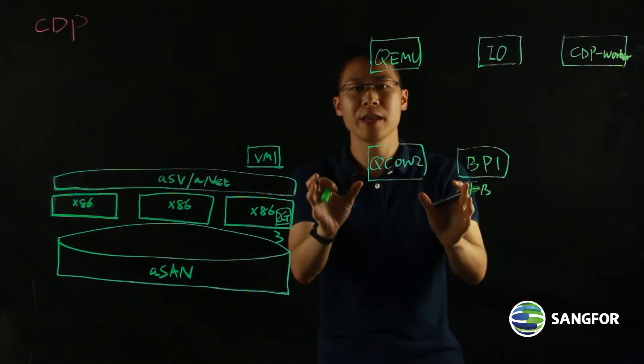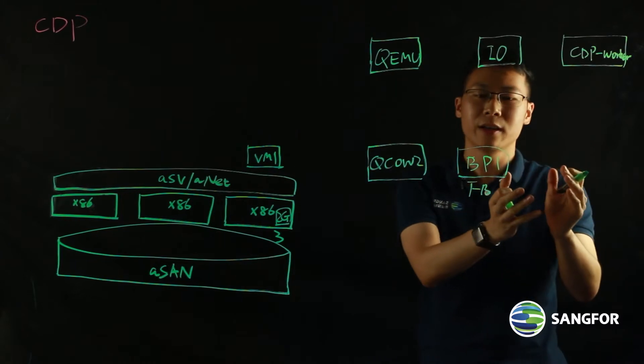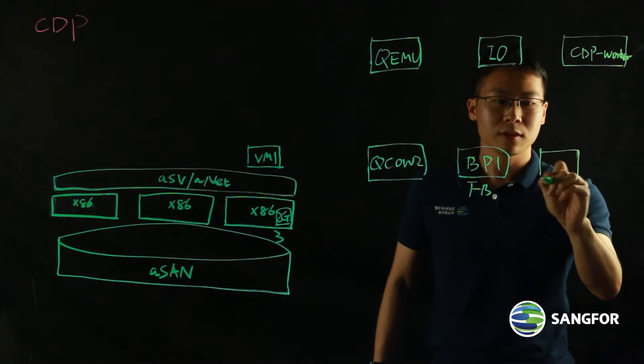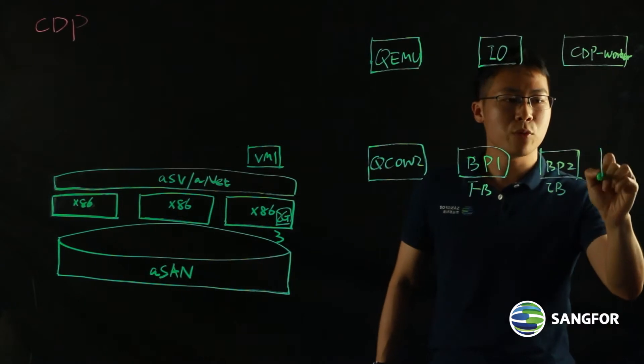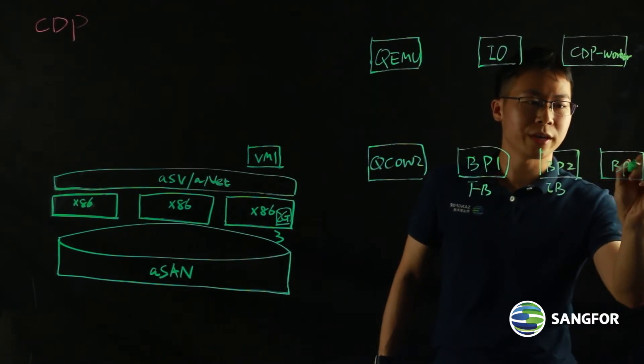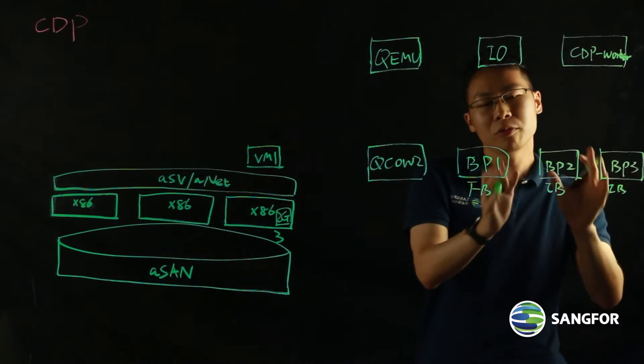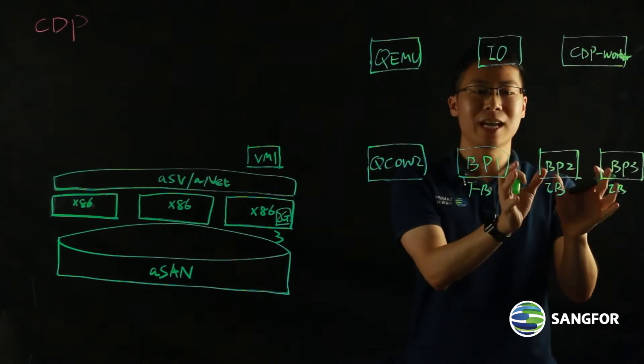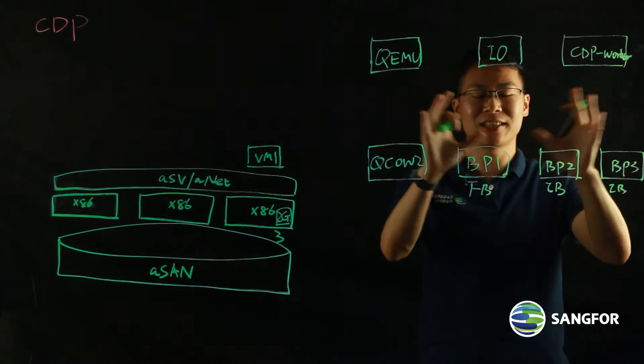It's a full copy of your QCOW2 file. And then subsequently, we can have incremental backup. This is BP2. It's an incremental backup. And then we can have BP3, which is also an incremental backup. Only data is changed or data is added will be backed up to that repository.